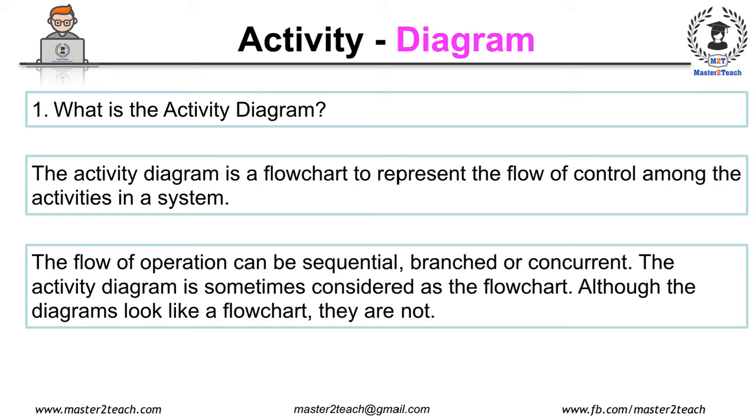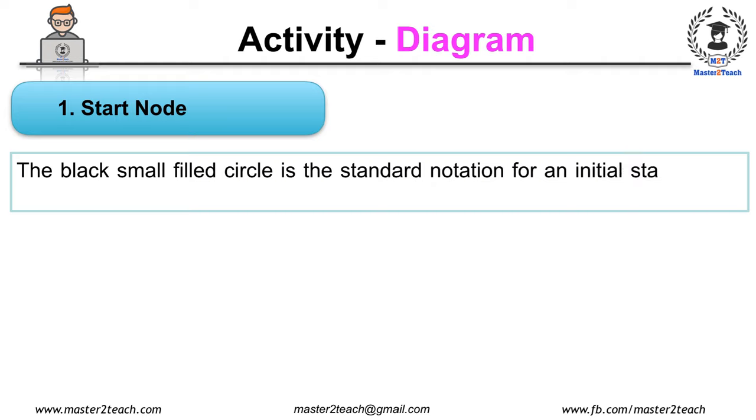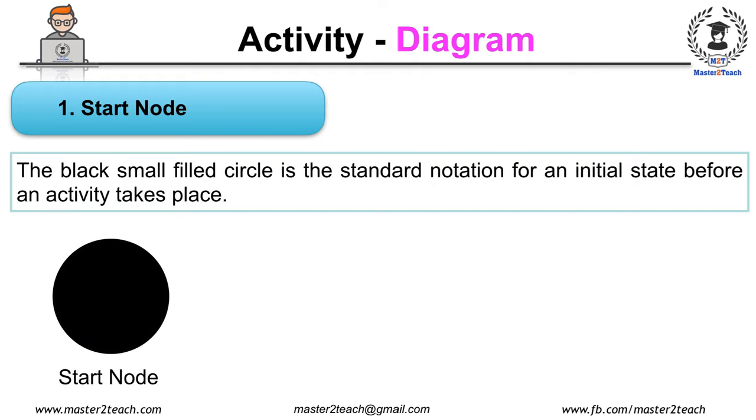Now let's move to learn different notations used in the activity diagram. Number one: Start Node. The black small filled circle is the standard notation for an initial stage before an activity takes place. In the flow chart we draw an oval shape label with a start.